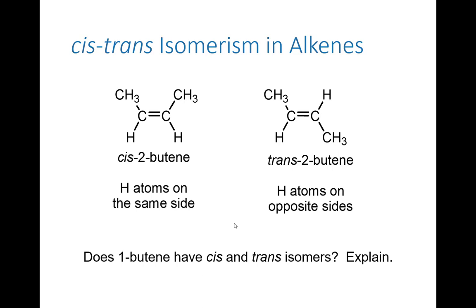Here are some examples. 2-butene is probably the simplest molecule that demonstrates cis-trans isomerism. This is cis-2-butene — you'll notice both hydrogens are pointing down. This is trans-2-butene — one hydrogen is pointing down and the other is pointing up. Of course we could rotate the molecule and then both hydrogens are pointing left or right. The important thing is that cis means they are pointing on the same side, whereas with trans they are pointing on opposite sides.